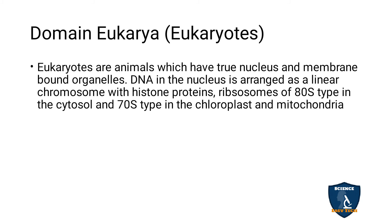The domain Eukaryotes — 'eu' means true, 'karyotes' means nucleus — so they have a true, well-developed nucleus. Cell-bound organelles such as mitochondria, Golgi apparatus, endoplasmic reticulum, and vacuoles are present. Examples include plants, animals, and fungi.